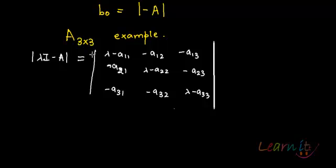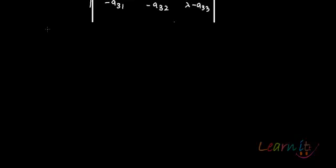So that is what we will get — this is the determinant that we are talking about. Now this determinant, if I expand it, expanding using the first row, it will look like λ minus A11 times the 2×2 minor.